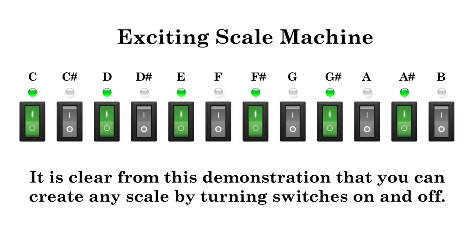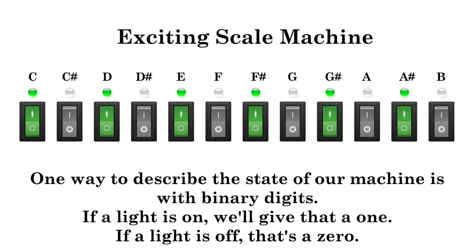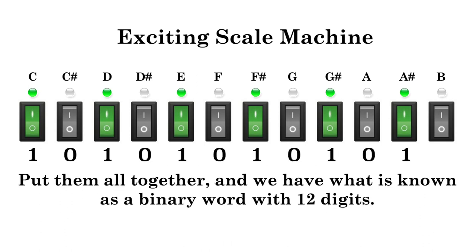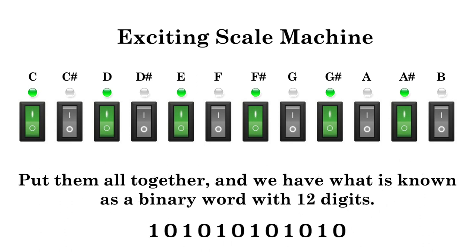It is clear from this demonstration that you can create any scale by turning switches on and off. One way to describe the state of our machine is with binary digits. If a light is on, we'll give that a 1. If a light is off, that's a 0. Put them all together, and we have what is known as a binary word with 12 digits.